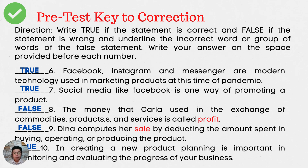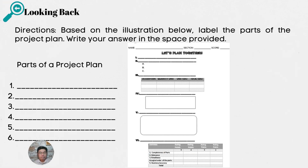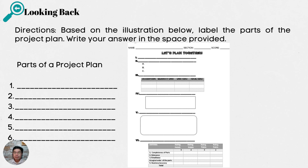Now, let's have a short review of your previous lesson by answering the Looking Back activity. Directions: Based on the illustration below, label the parts of the project plan. Write your answer in the space provided. You must write your answers in your notebook. If you still need more time to answer this, just pause this video. To give you a bigger view of the project plan, here is the next slide.